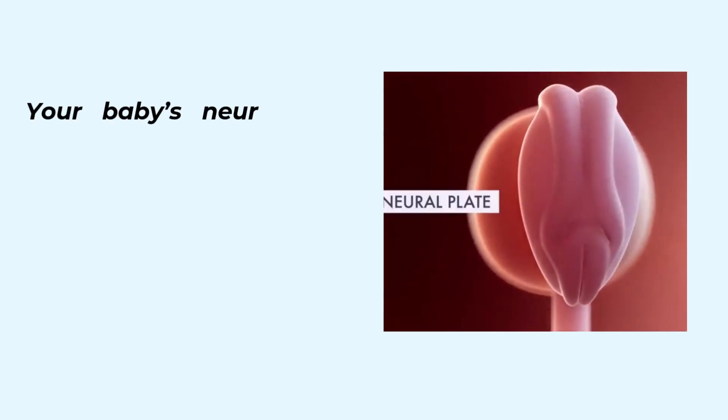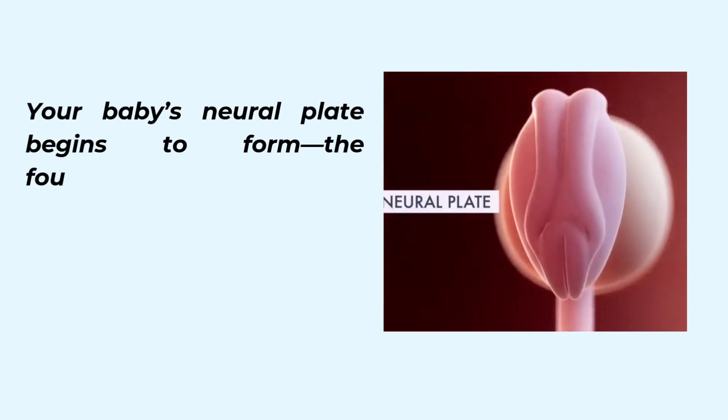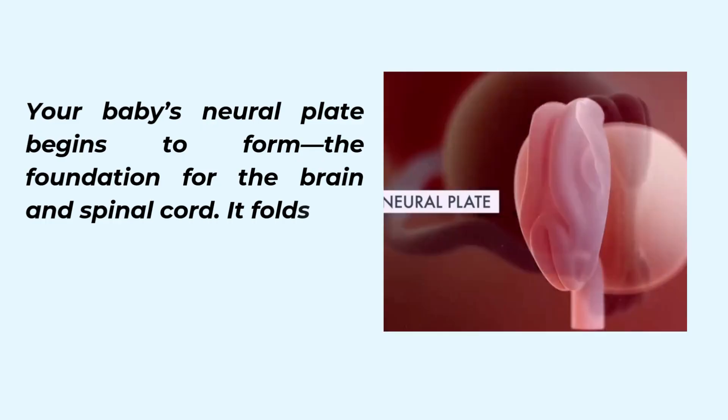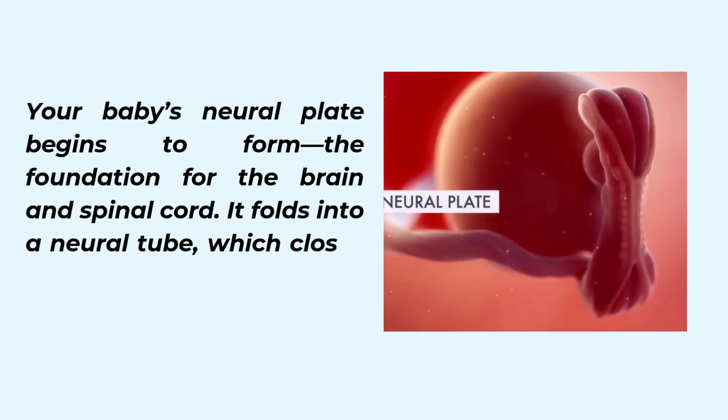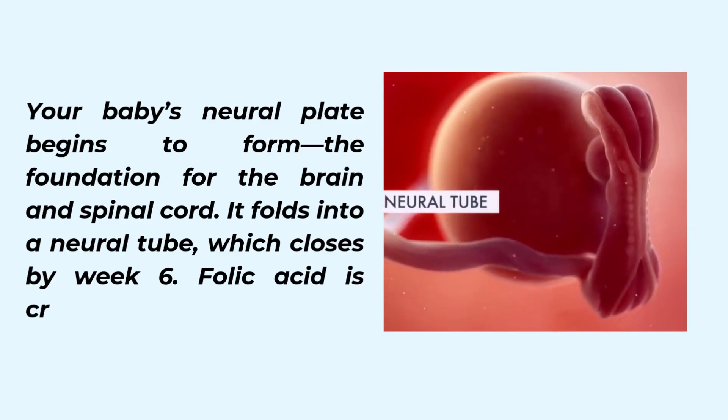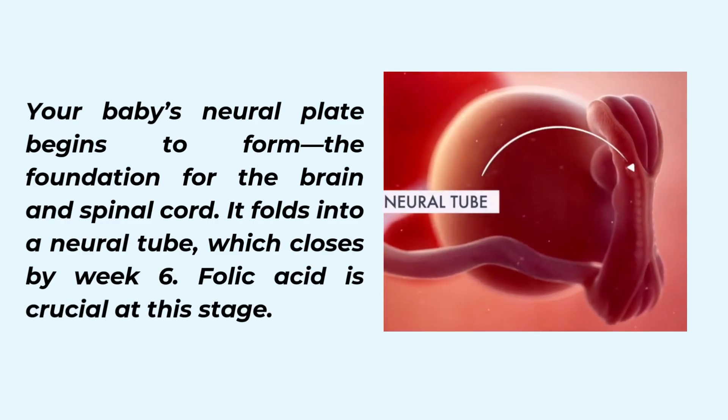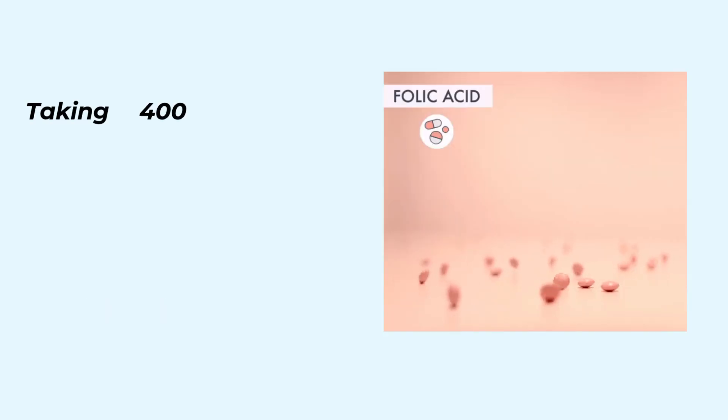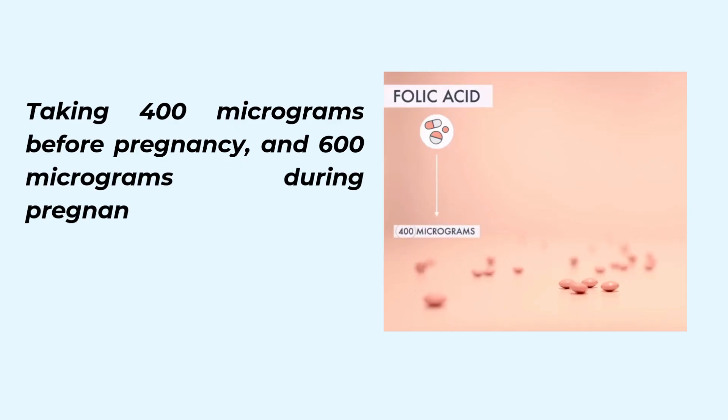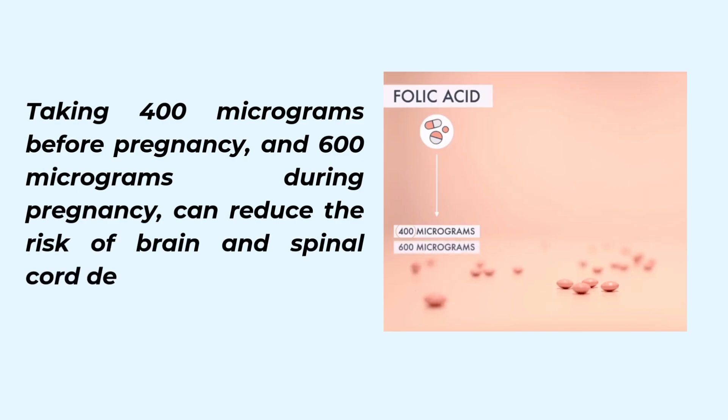Your baby's neural plate begins to form, the foundation for the brain and spinal cord. It folds into a neural tube, which closes by week six. Folic acid is crucial at this stage. Taking 400 micrograms before pregnancy and 600 micrograms during pregnancy can reduce the risk of brain and spinal cord defects by over 70%.